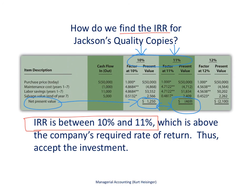The final step is to compare the internal rate of return to the company's required rate of return, often called a hurdle rate. The company's required rate of return is 10%. Since this project is expected to yield an internal rate of return between 10% and 11% — higher than that — we as a company would go ahead and accept this investment. If the internal rate of return happened to be lower than 10%, then we would reject this investment.